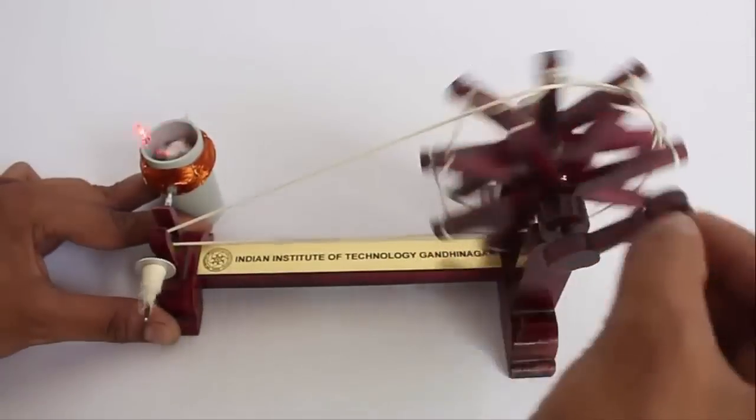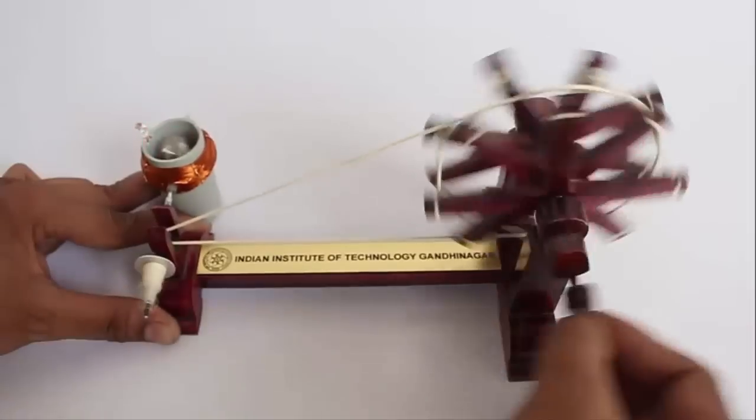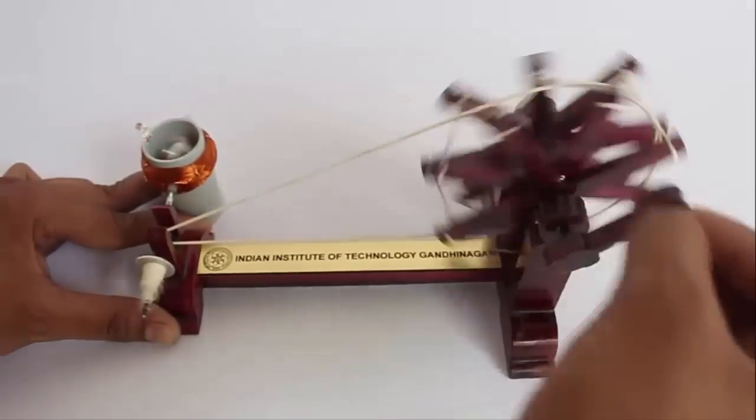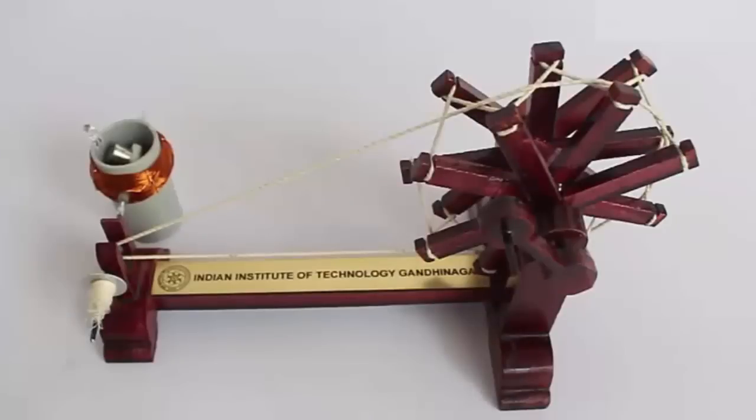In the spinning wheel, we have a larger and smaller wheel connected by a thread. And this acts like a gear. Spinning the larger wheel leads to the smaller wheel spinning many times.